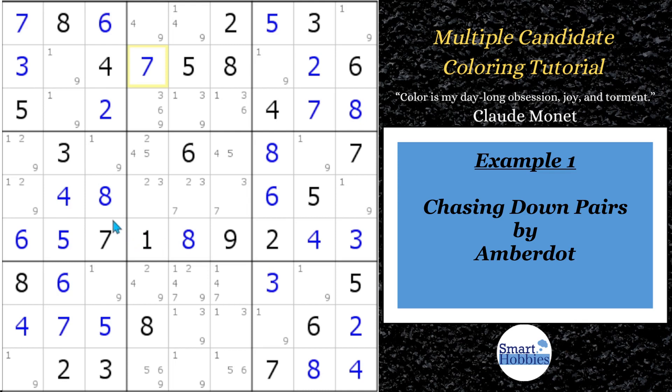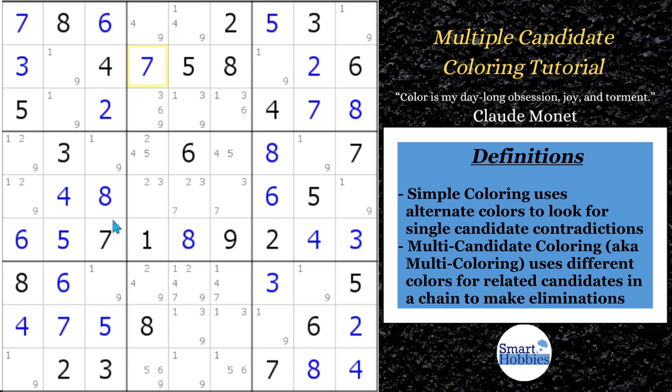If you remember from my first tutorial, Simple Coloring, also known as Singles Chains, it's a strategy that allows you to solve and eliminate candidates by looking for contradictions, but you're just focused on one candidate. In multiple candidate coloring, this is a strategy where you use different colors to represent related candidates in a chain to help you solve or eliminate candidates. It's actually pretty simple in how we do it.